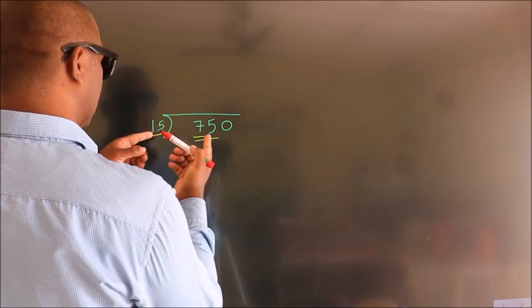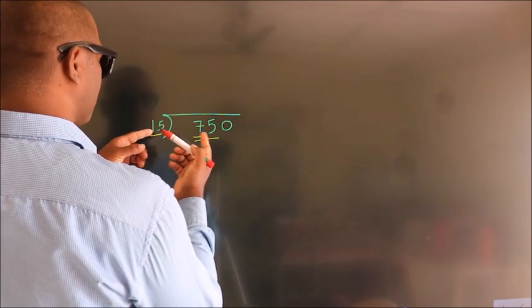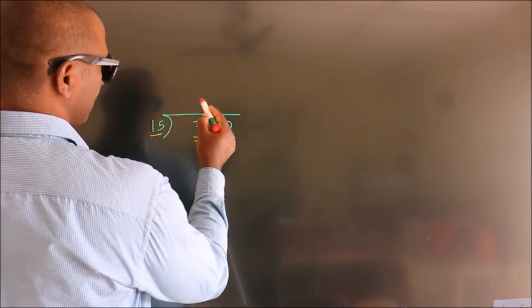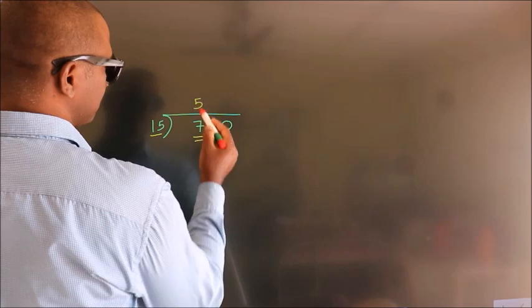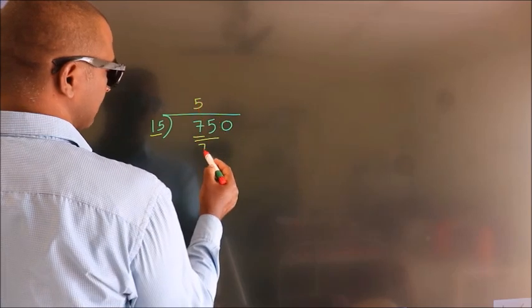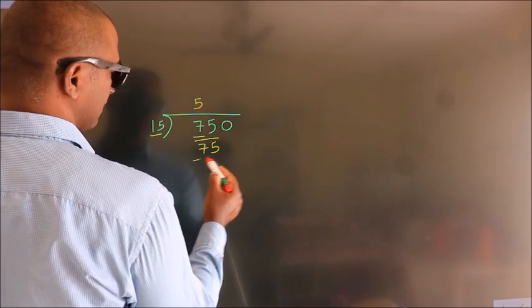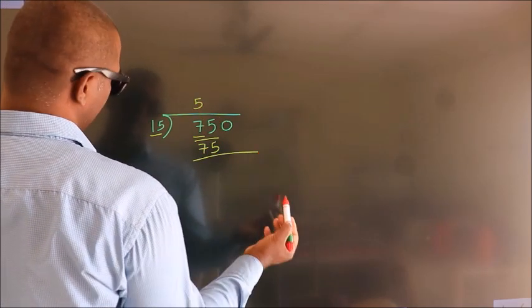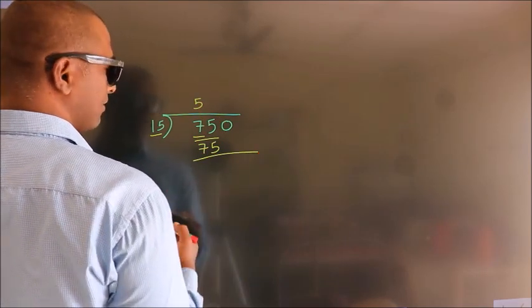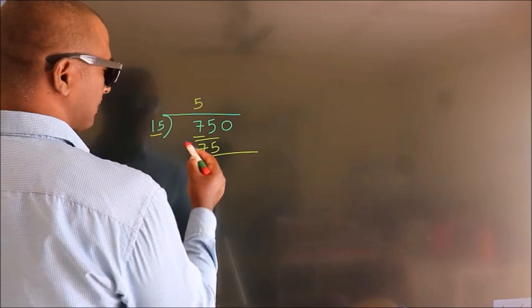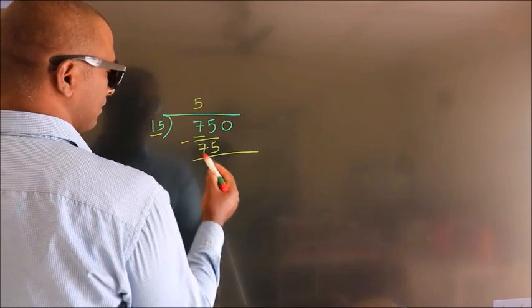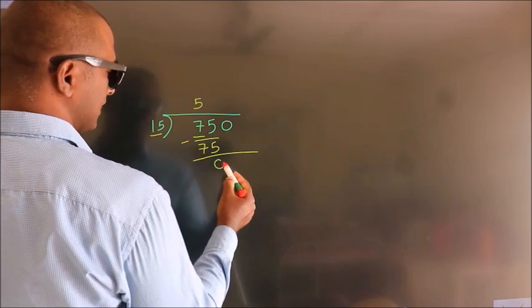When do we get 75? In the 15 table. 15 fives: 75. Now we should subtract. We get 0.